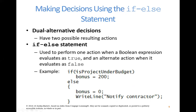One thing I want to point out in this example is the expression in the control statement. This is the name of a Boolean variable — is_project_under_budget is a Boolean variable that holds either true or false. Inside your if control statement, you can put anything that can be evaluated as true or false: something equals something else, something is greater than something else, or the name of a Boolean variable that itself holds true or false.